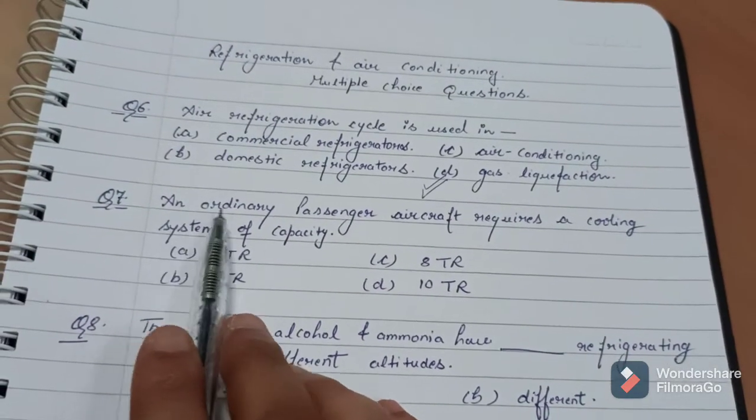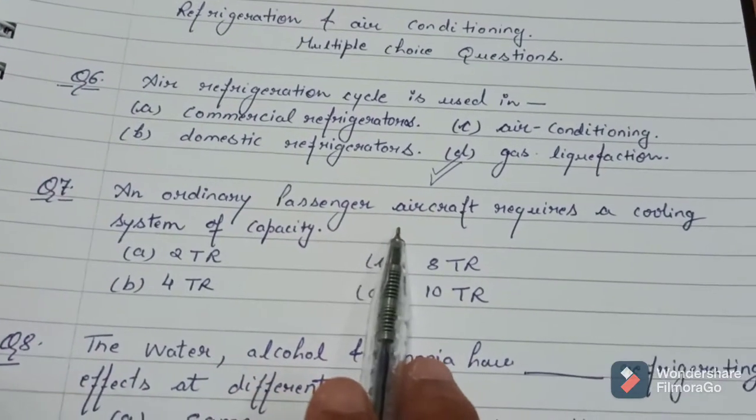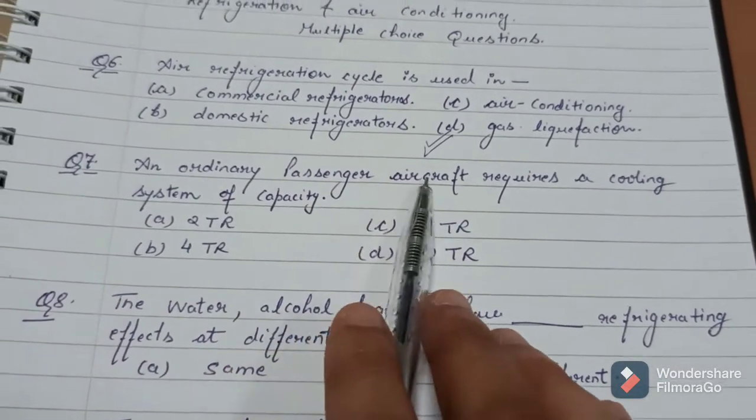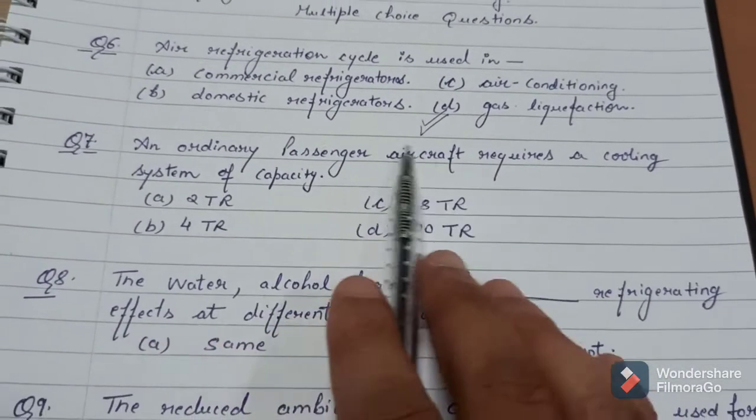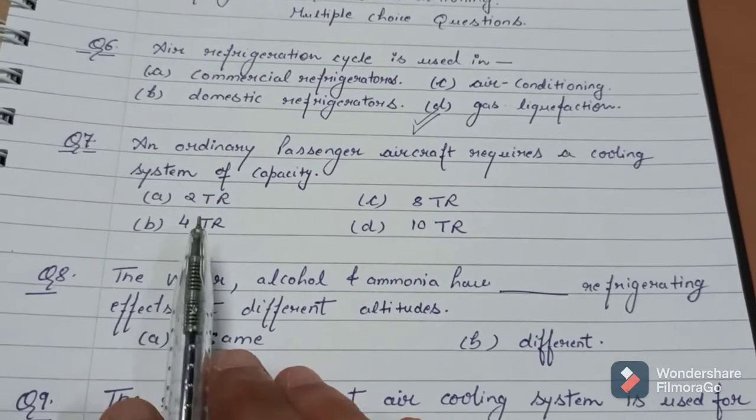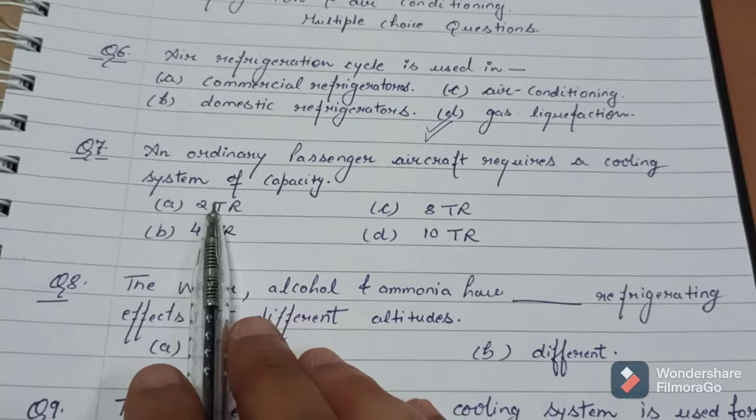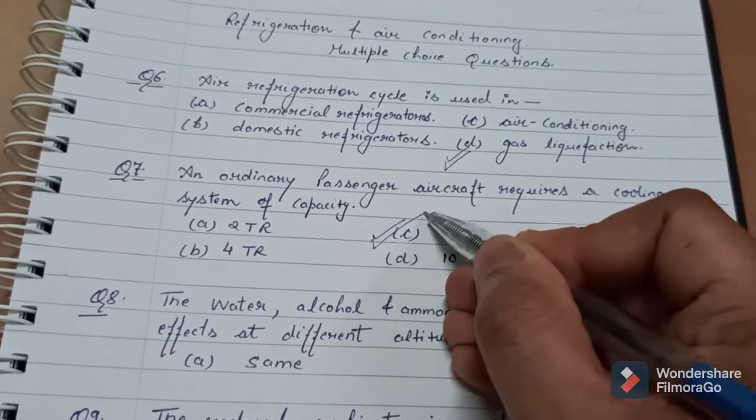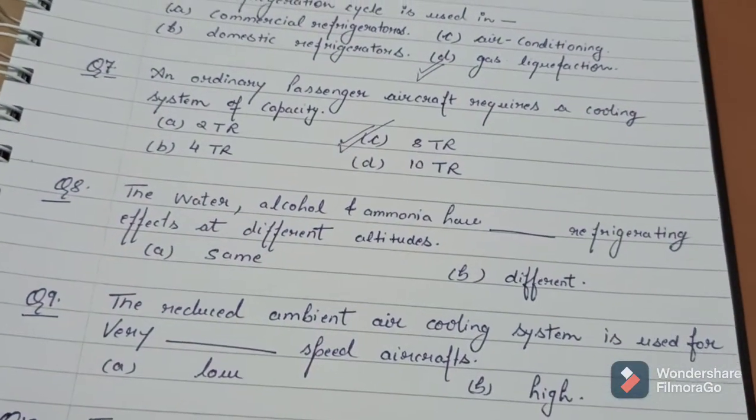Question number 7. An ordinary passenger aircraft requires a cooling system of capacity - ordinary passenger aircraft system, how many tons of capacity is required? 2, 4, 8, or 10? So the answer is 8 TR capacity is required.